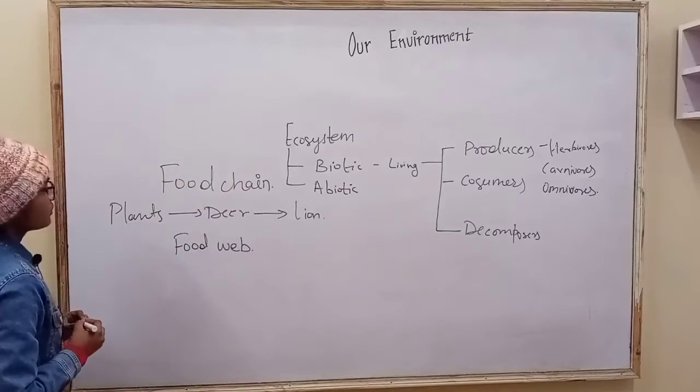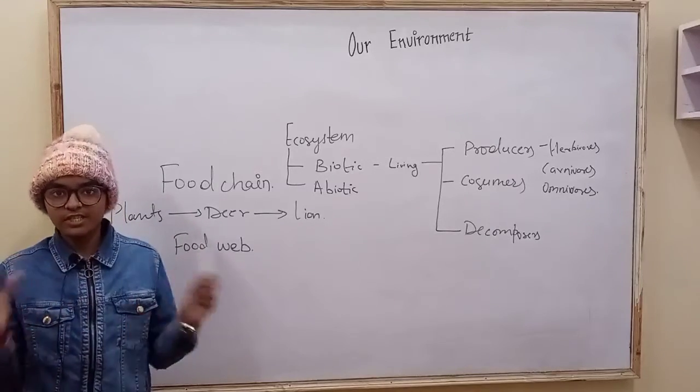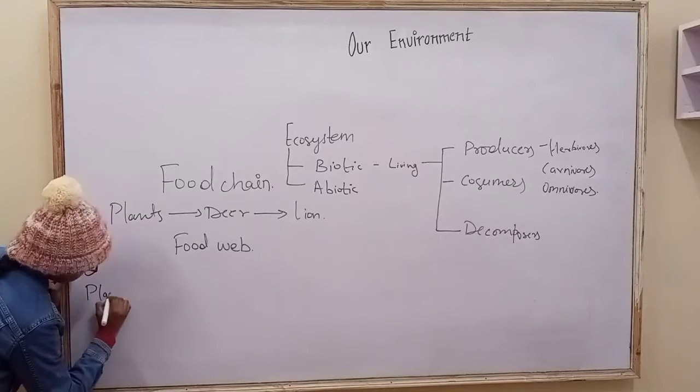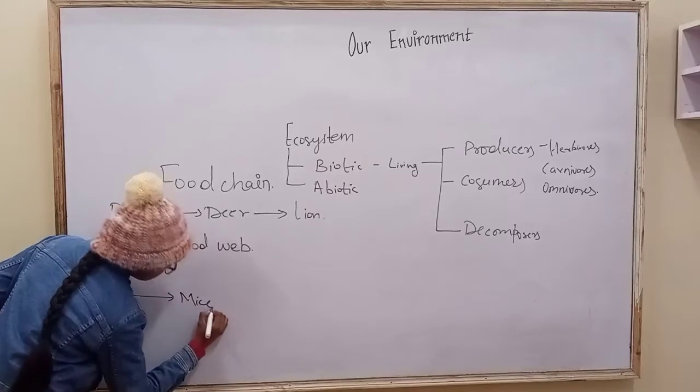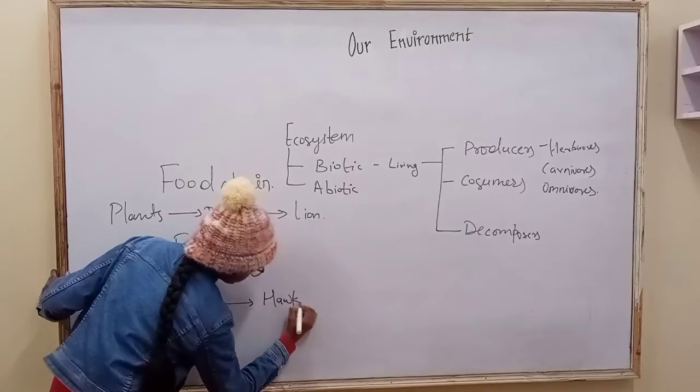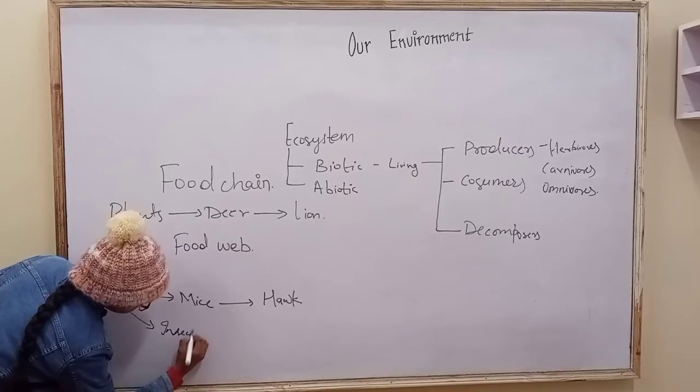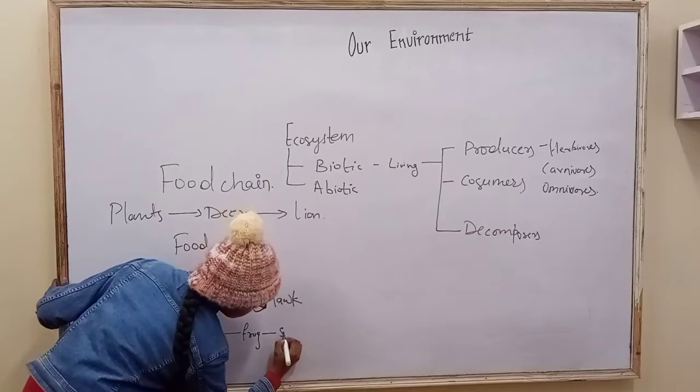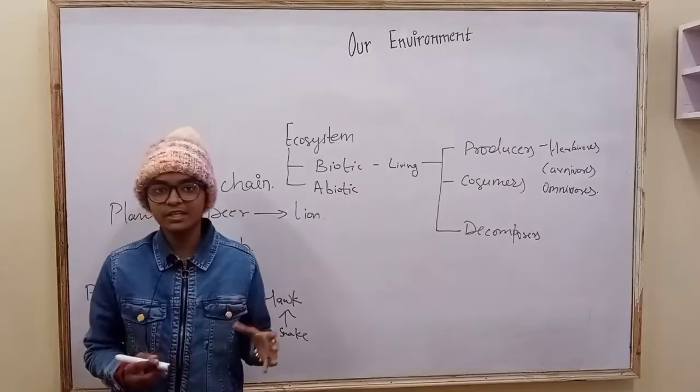Food web is the interconnection of food chains. A lot of food chains are made by a food web, such as plants to mice to hawks, plants to insects to frogs to frogs to snakes and snakes to hawks. So many food chains are made by a food web.